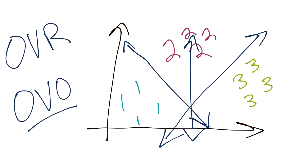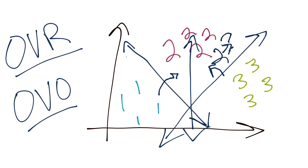When you have an unknown data point with OVO, you check which side of each relevant hyperplane it falls on. For example, it might be on the two-side of the ones-versus-twos hyperplane, and also on the two-side of the twos-versus-threes hyperplane, suggesting it's a two. OVO is more complex than OVR — with OVR, finding which side of a hyperplane the point is on pretty much gives you your answer, while OVO requires a chain of checks.